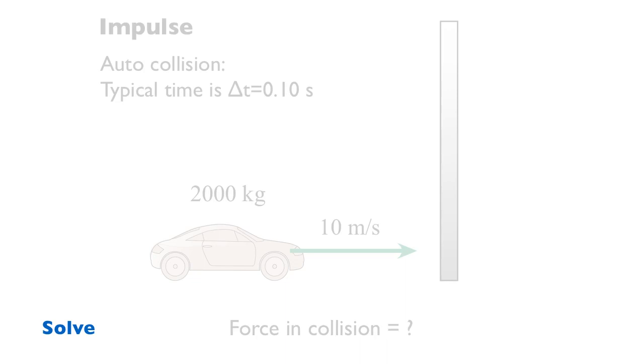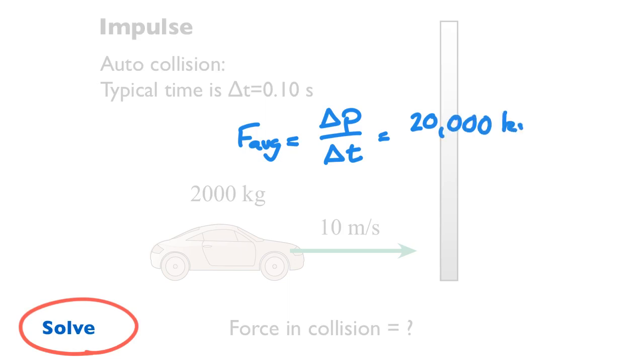We can use that to compute the average force. To do our solution, we're going to say this: the average force is just equal to the change in momentum divided by the time interval. The change in the momentum was 20,000 kilograms meters per second, and the time interval was 0.1 seconds. So we compute an average force of 200,000 newtons.